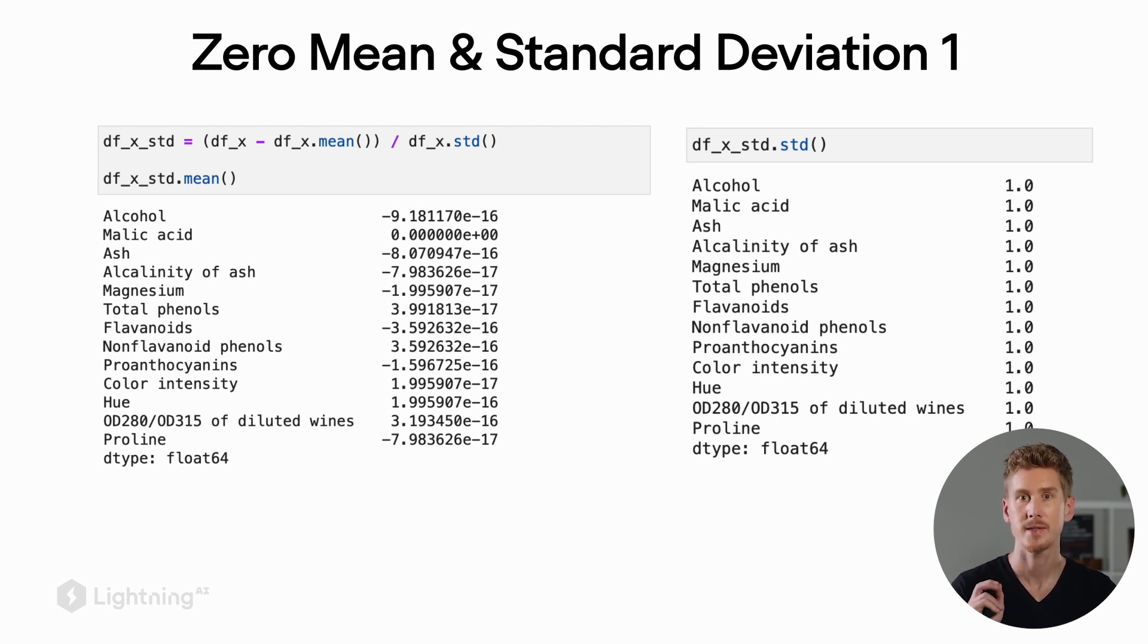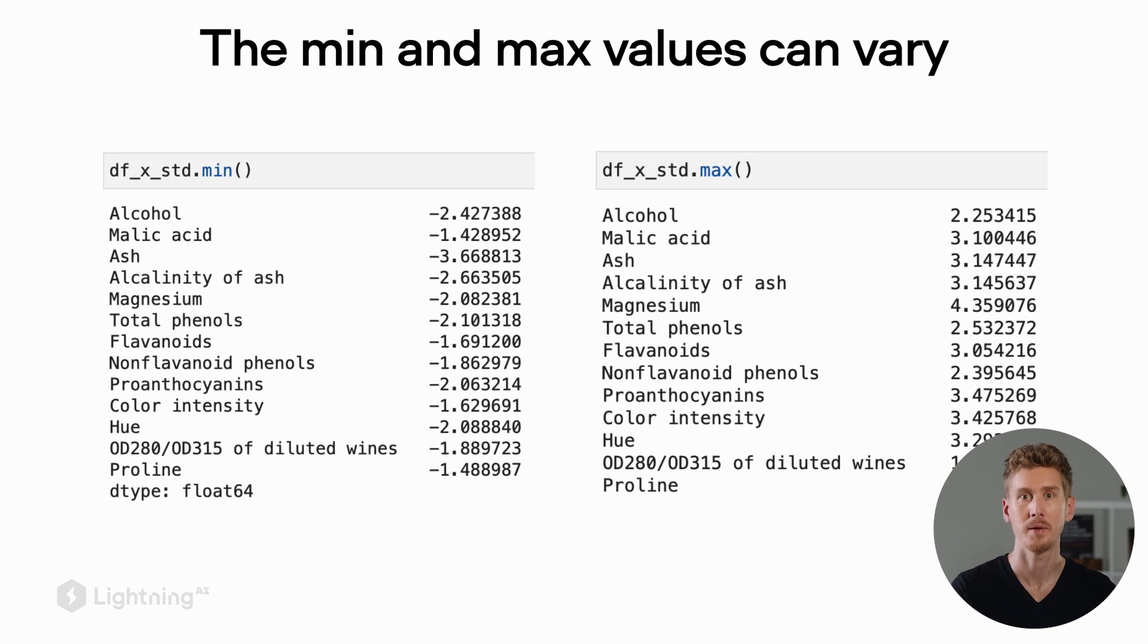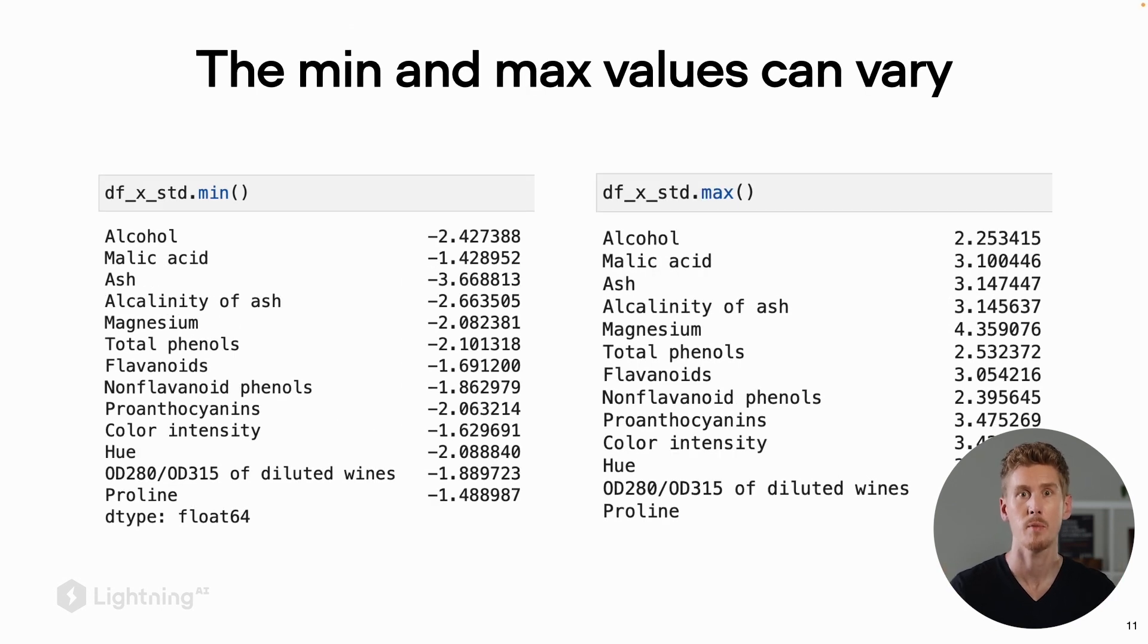After this z-score standardization, the mean of these features will be centered at zero and the standard deviation of the features will be one. Note though, in contrast to zero-one normalization, the z-score standardization will not clip the minimum and maximum value of the feature columns. This is how zero-one normalization and z-score standardization work in a nutshell.